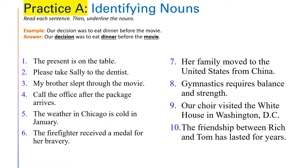First exercise: identifying nouns. What we have to do in this exercise is find the nouns and underline them. We have an example here: 'Our decision was to eat dinner before the movie.' The nouns are decision, dinner, and movie, so we underline them. Let's do it together. Number one: 'The present is on the table.' Here we have two nouns — present and table.